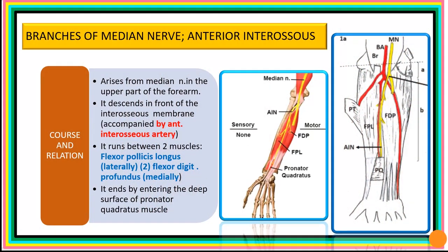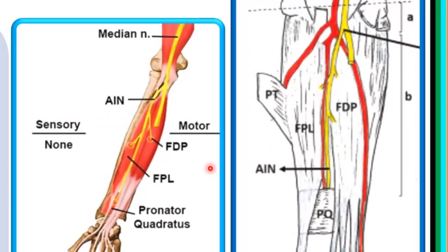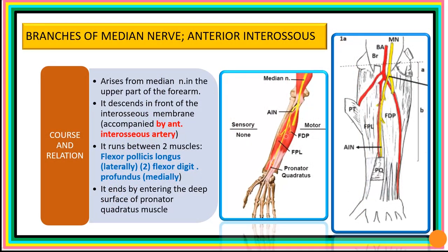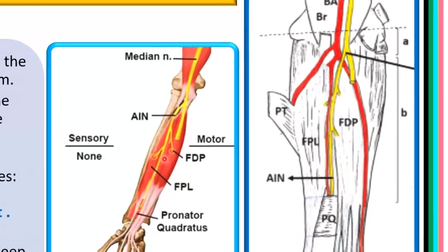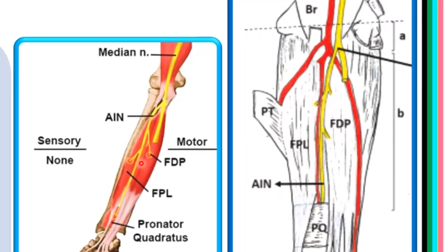One of its branches is called the anterior interosseous nerve. Here is the median nerve and here is its main branch — the anterior interosseous nerve — running down deep in the forearm. This is actually the biggest branch of the median nerve in the forearm and is given off at the upper part of the forearm. Here we can see the median nerve and at this point the anterior interosseous nerve giving off.